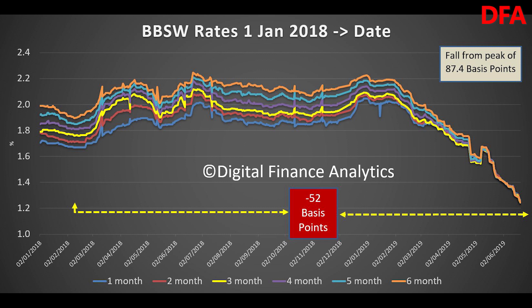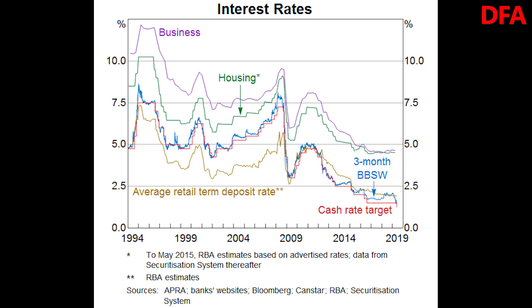All of this helps to explain the sharp falls in the BBSW rates, which are now around 87 basis points lower than the recent peak. The cash rate is an effective instrument for implementing monetary policy because it affects the broader interest rate structure in the domestic economy. The cash rate is an important determinant of short-term money market rates such as the bank bill swap rate or BBSW, and retail deposit rates. These rates, as well as a number of other factors, then influence the funding costs of financial institutions and the lending rates faced by households and businesses.